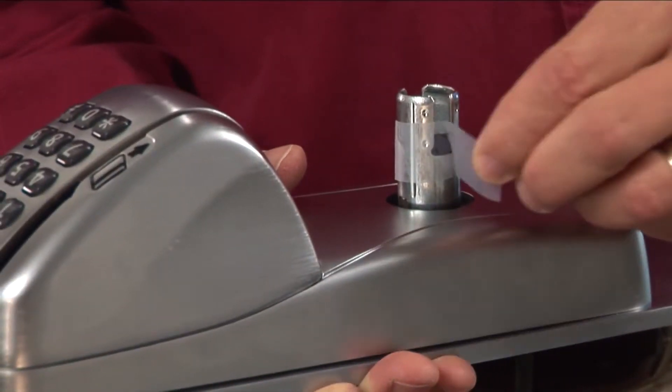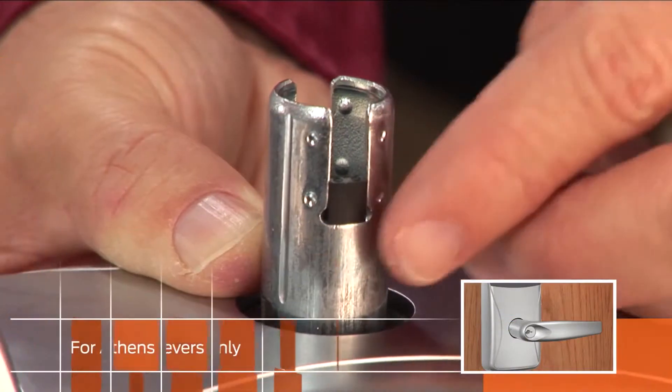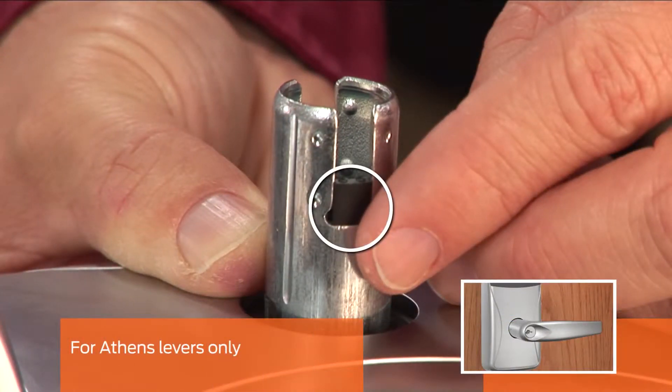Remove the protective tape from the spindle. If you have an Athens style lever, remove the spacer from the spindle.